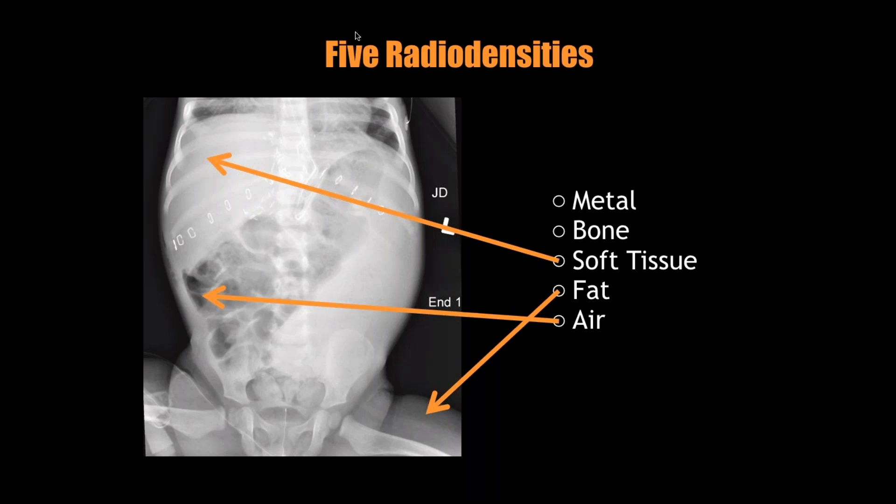Where does cartilage fall on the spectrum between fat, soft tissue, and bone? Cartilage would show up as soft tissue — it would be indistinguishable from any other soft tissue. In children, we always see a lot of cartilage. On that femur, the space between the femoral head and the femoral metaphysis is cartilage, and the space between the femoral head and the ossified part of the acetabulum is also cartilage. The intervertebral discs are all cartilage as well — all soft tissue density.